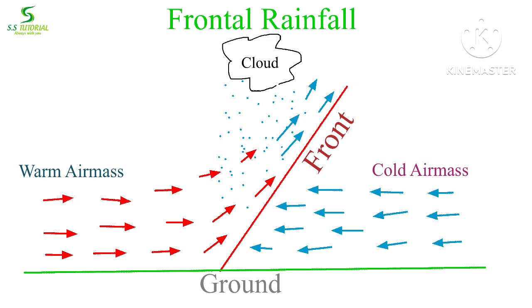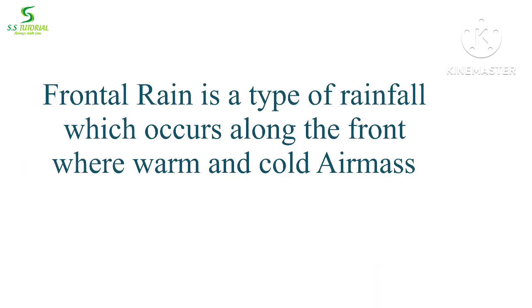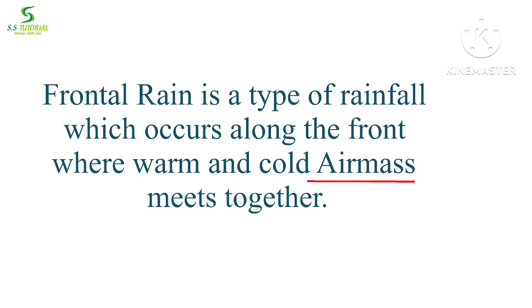Frontal rain is very common in mid-latitude regions like the UK, Ireland, and so on, where a warm air mass meets with a cold air mass and forms a front. Frontal rainfall is one of the most important types of rainfall among the three types of rainfall.